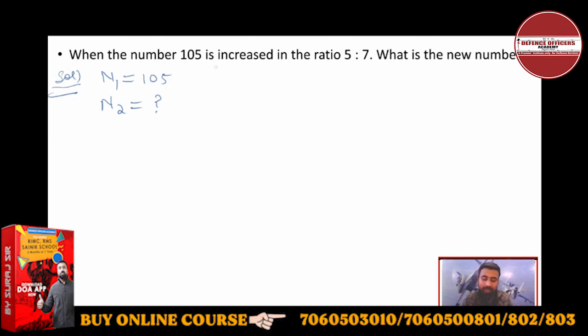It is increased in the ratio of 5 to 7. If n1 is to n2, then how much is 5 to 7?